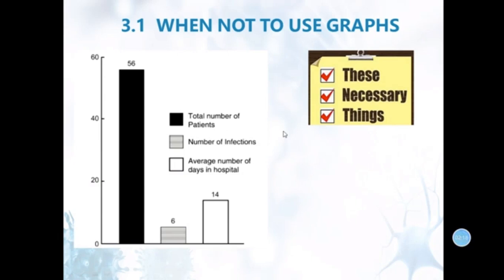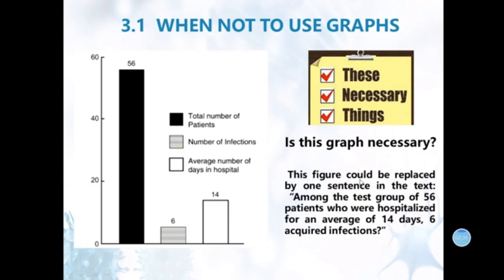Here is an example. This is a graph. Do you think it's necessary or not? It's good, it's necessary. This figure could be replaced by one sentence in the text. Like, we have a group of 156 patients, totally 156 patients, who were hospitalized for an average of 14 days. 6 acquired infections. So, this graph is not necessary.